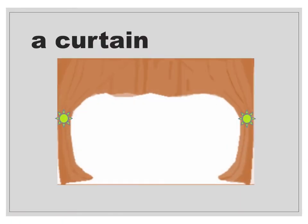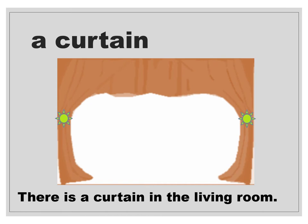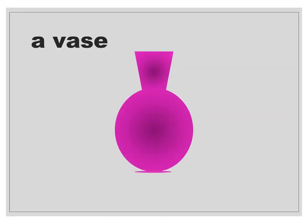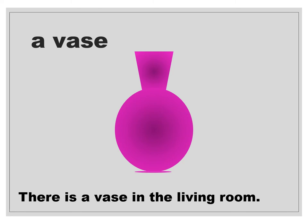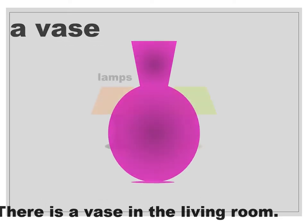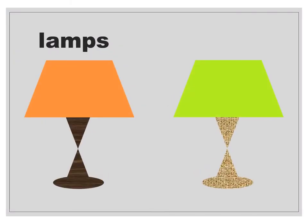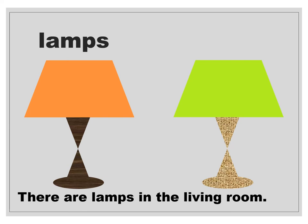A picture. There is a picture in the living room. A picture. A curtain. There is a curtain in the living room. A curtain. A vase. There is a vase in the living room. Lamps. There are lamps in the living room. Lamps.